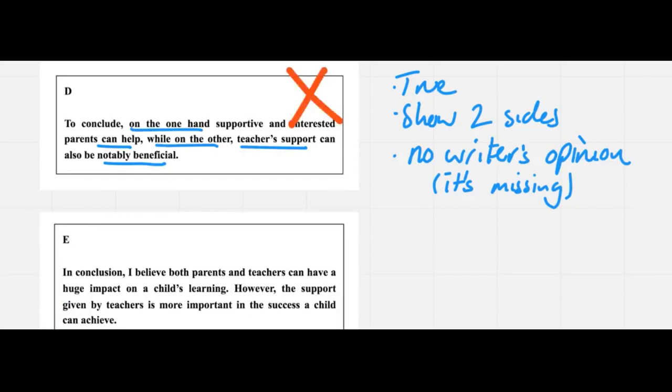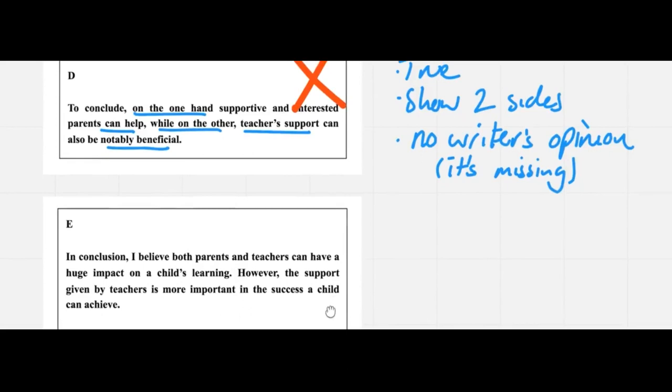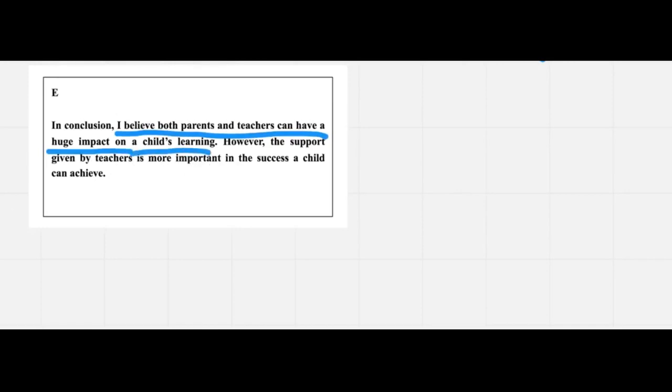Which brings us on to the final one. 'In conclusion, I believe both parents and teachers can have a huge impact on a child's learning.' That's very good, we've actually said that before. Yeah, sounds good. 'However, the support given by teachers is more important in the success a child can achieve.' Uh-oh, really?